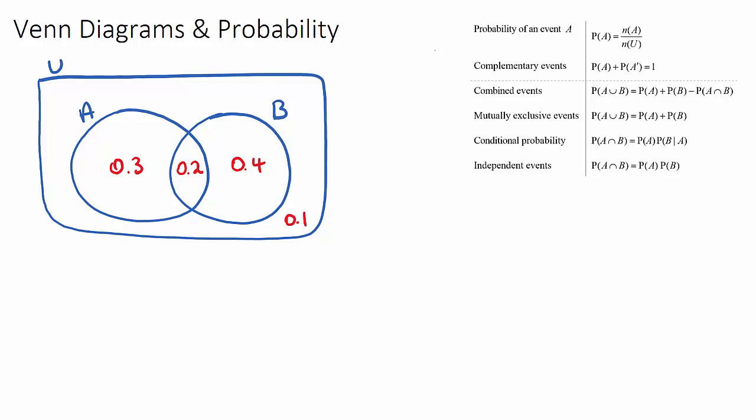In this video we're going to look at Venn diagrams and how they relate to some common IB Maths probability questions. I've given you an example Venn diagram here where we have our universal set, our sample space, and inside of this are two events A and B. These red numbers are our probabilities and they need to add up to one inside of our sample space such that we have a proper Venn diagram question.